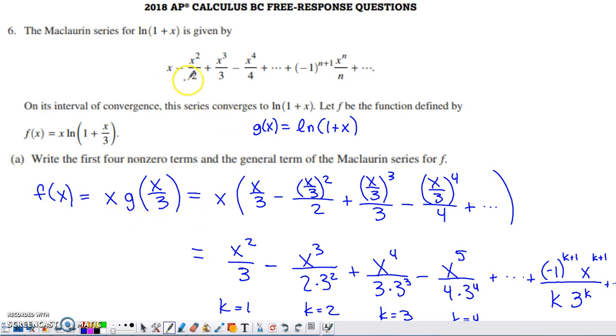So f of x is equal to x times g of x over 3. What I did is I took the series that converges to g of x, and I replaced all of the x's with x over 3, and then I also multiplied that series by x. I went ahead and distributed this x into all of those terms.